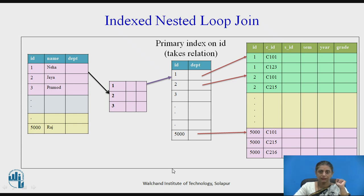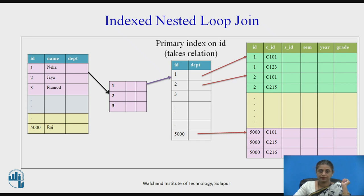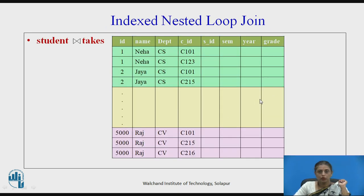The key difference is that in nested loop join, when we take the first record it is checked against all records of S. Here, it is replaced with index lookups, so it is checked only with the records available for that particular ID or index value. This saves comparisons, provided the index is available and fits in main memory, making it faster. The result of the join operation itself is not changed — only the method of computing it using index nested loop join.